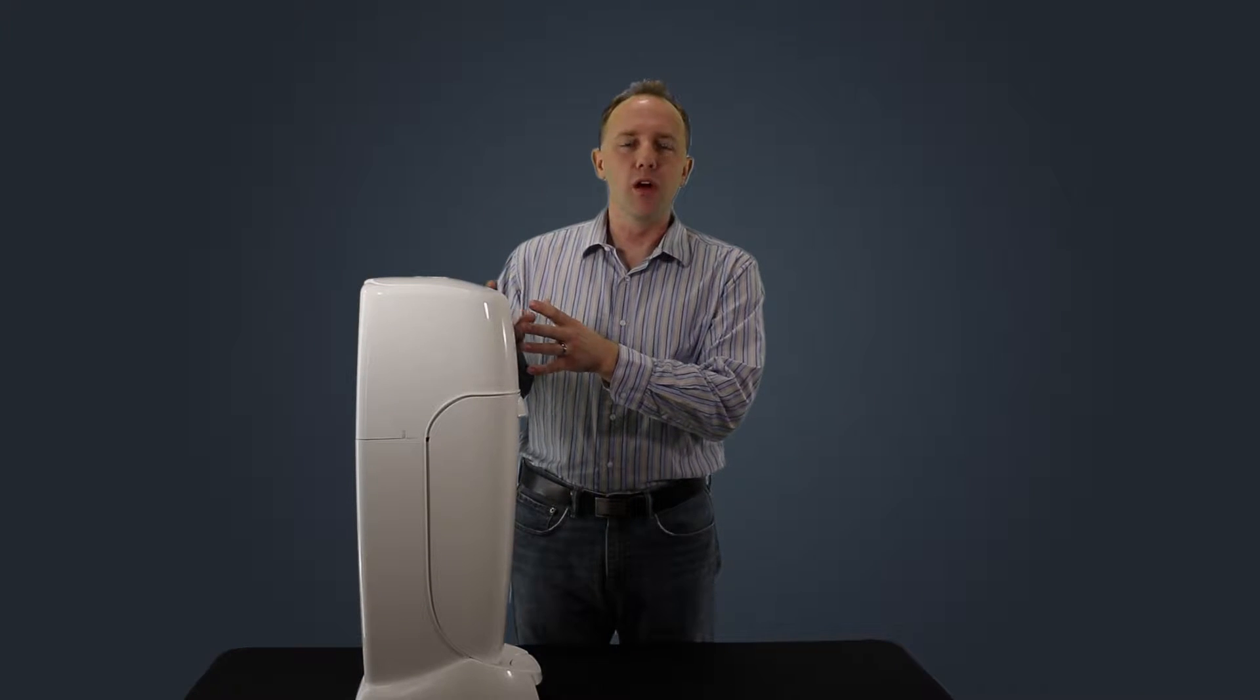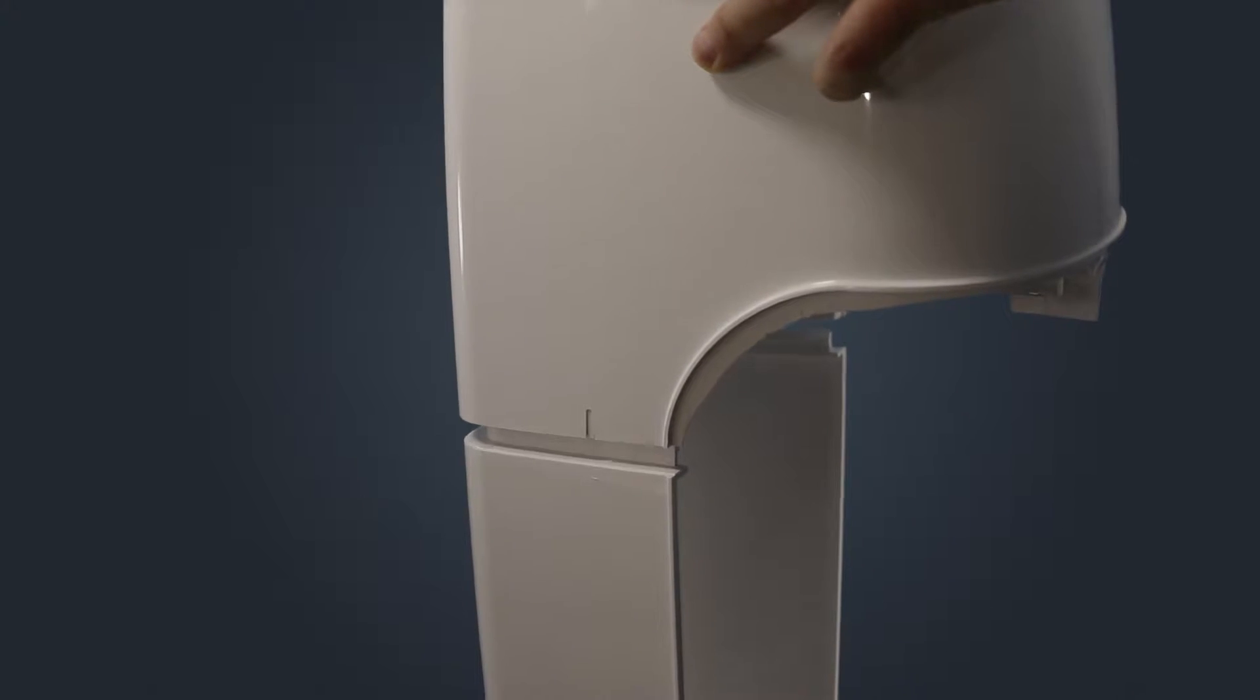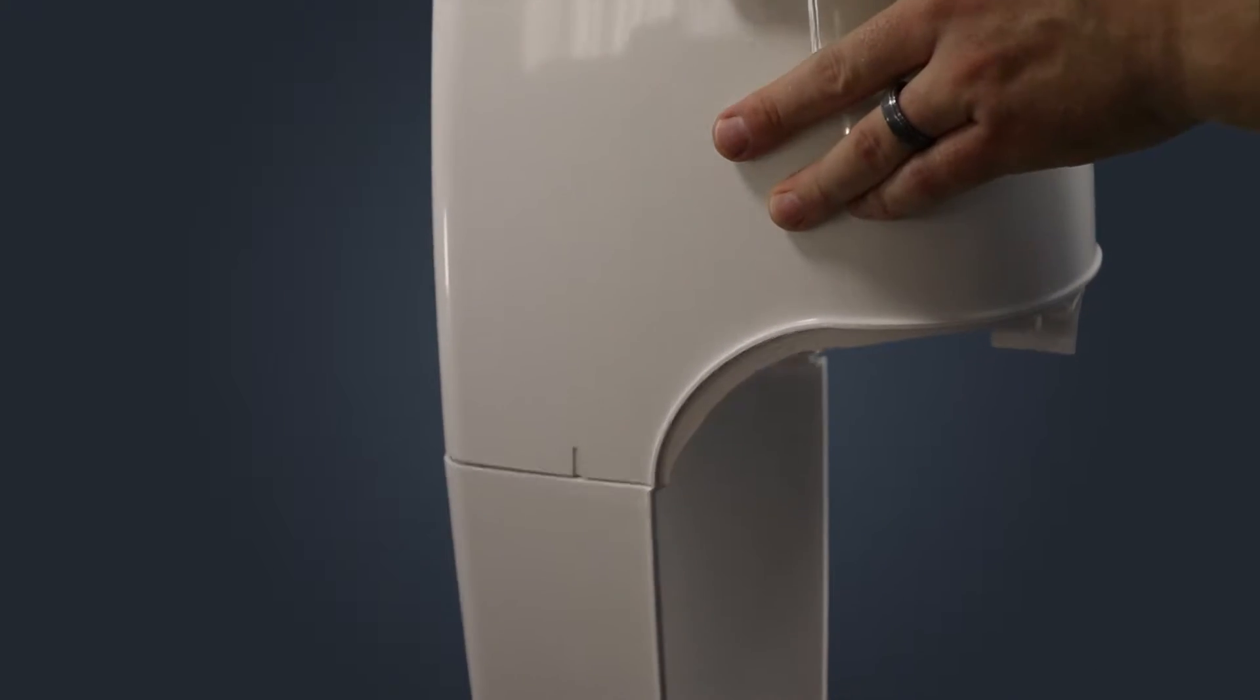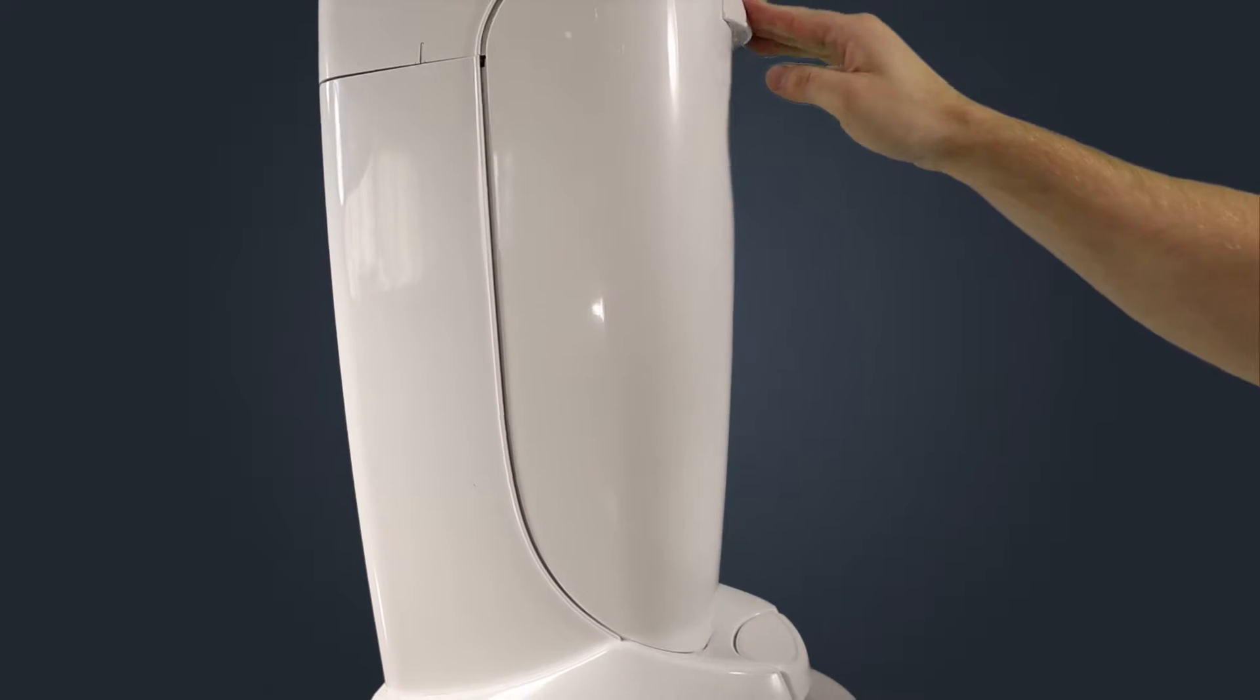Start by assembling the top door assembly onto the main body. Align the top door assembly and firmly press it into the base. Next, install the front canister door by inserting it at an angle into the main body and closing the door.